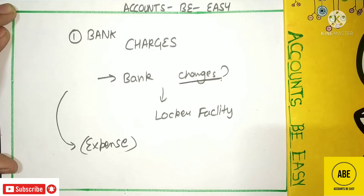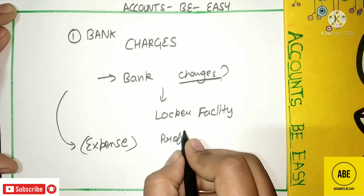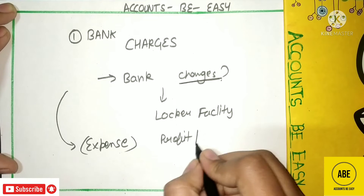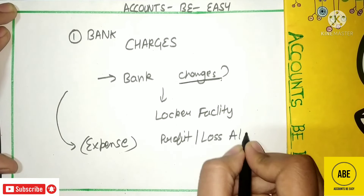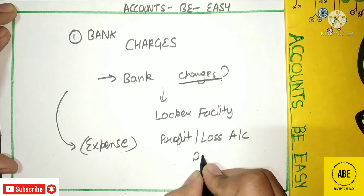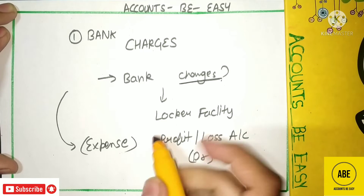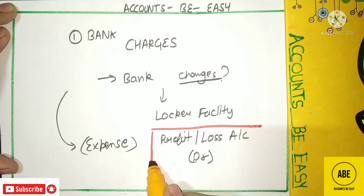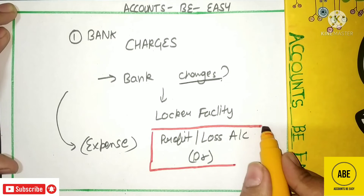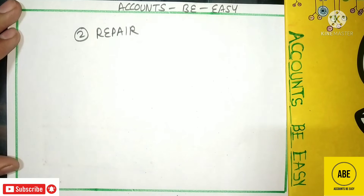Whatever expense you incur, it goes to the profit and loss account on the debit side. Whatever loss you have, it also goes to the profit and loss account on the debit side.